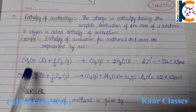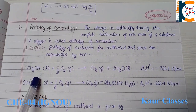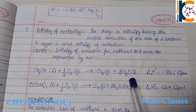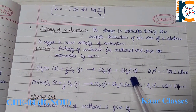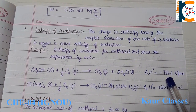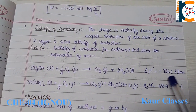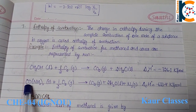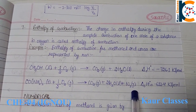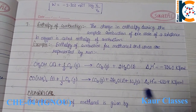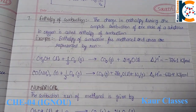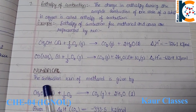For example, the enthalpy of combustion for methanol: methanol reacts in the presence of air to give carbon dioxide and water, and the combustion enthalpy equals −726.1 kJ/mol. For urea, combustion also gives carbon dioxide, water, and nitrogen gas, releasing a large amount of combustion energy.